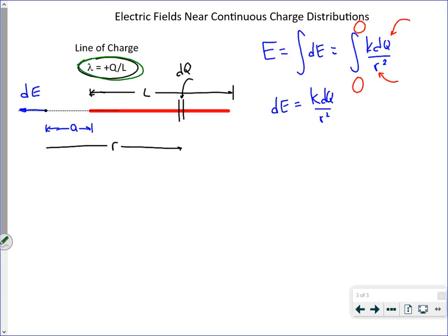Now, a couple things to notice. When we say E equals KQ over R squared, this is magnitude. So what you ought to, what your work ought to bear out is that your expression for E comes out negative.